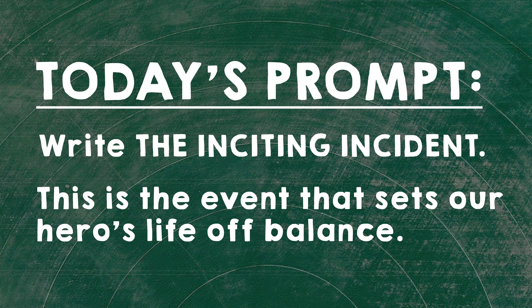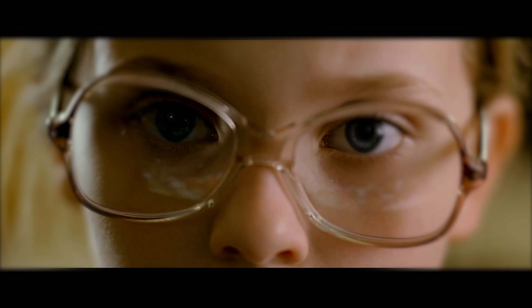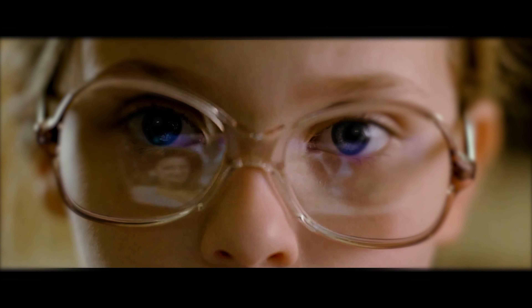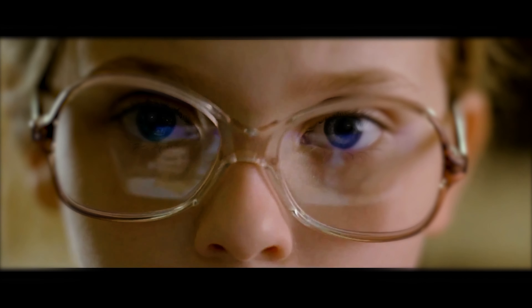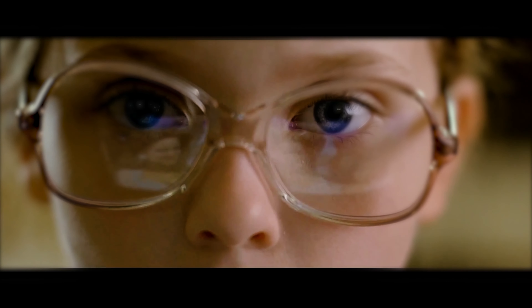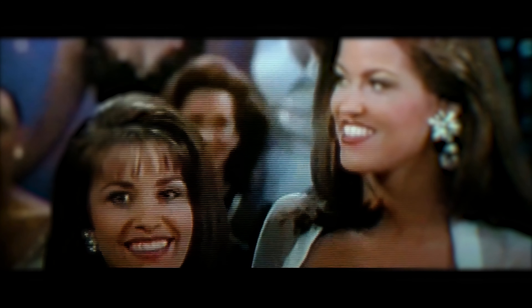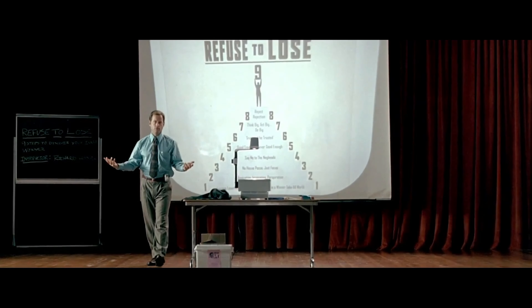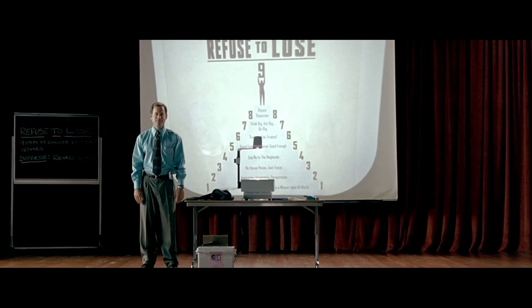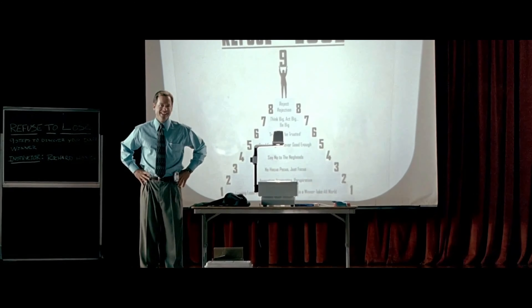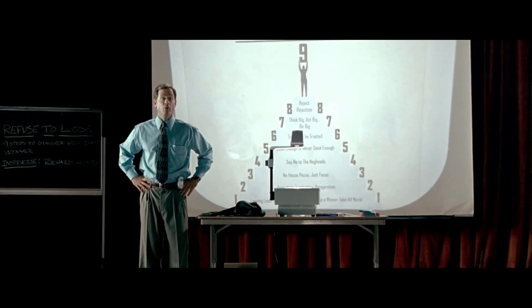We're going to see the inciting incident now. Some stories will spend the first 10 to 15 minutes establishing character — like in Little Miss Sunshine, where we meet Olive and her extremely dysfunctional family, her desire, her 'I want' song to become the Little Miss Sunshine pageant winner, and we get a sense of what's wrong with all the people around her. That's what we're setting up in this first 10 to 15 minutes before the inciting incident puts the character onto a journey.